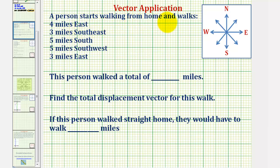A person starts walking from home and walks four miles east, three miles southeast, five miles south, five miles southwest, and three miles east. We have three questions here. The first question is: this person walked a total of how many miles?